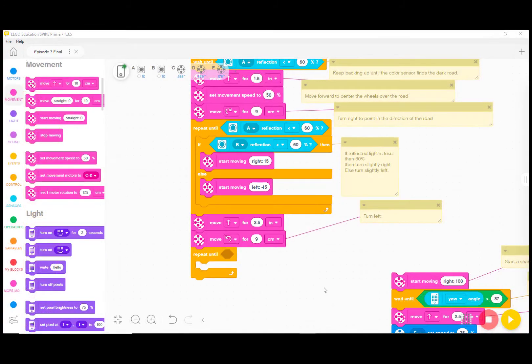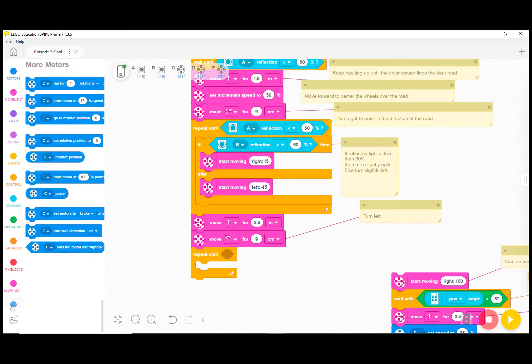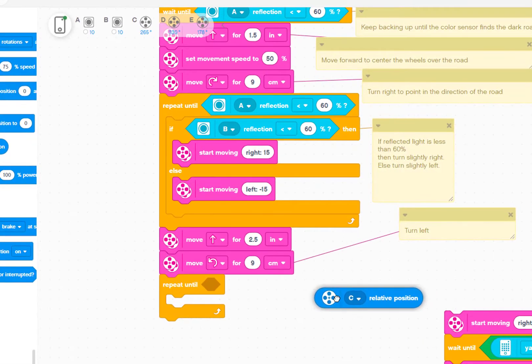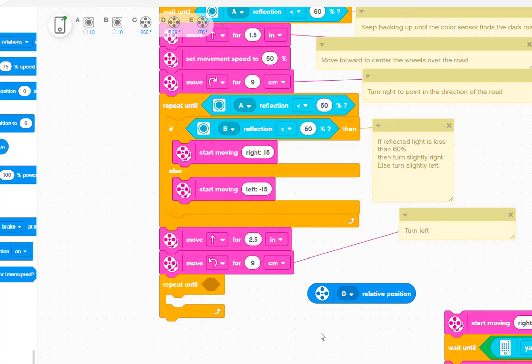Now we have a bunch more blue motor blocks. We want the program to watch the motor rotation degrees increase as Chariot moves down the road. For complicated reasons, the left motor's relative position will actually decrease as the robot moves forward, while the right motor's position will increase. So let's use the right motor by selecting port D because that's where the right motor is plugged in.